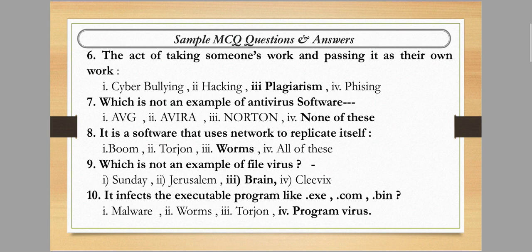Next question: it is a software that uses the network to replicate itself. The options are boom, torsion, worms, and all of these. Option number three is the correct answer — a worm is software that uses the network to replicate itself.